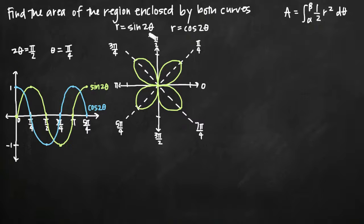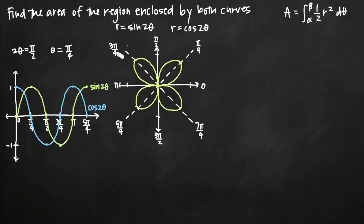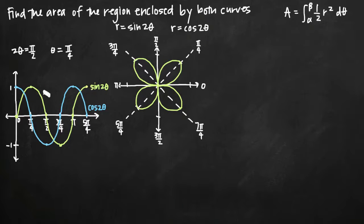Then we plug in π/4: sine of 2 times π/4 gives sine of π/2, which equals 1 on the unit circle, so we plot 1 there and keep going. When you do that for the sine curve, you get this curve sketched in green. When you do it for the cosine curve, you get the curve sketched in blue.